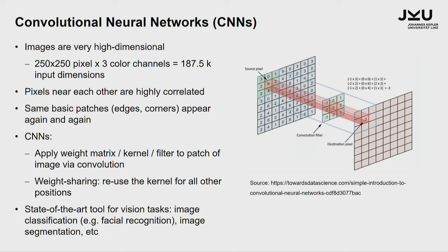You reuse only a very small number of weights — in this picture it's only nine weights reused again and again. This is in very stark contrast to a fully connected network where every pixel would be connected to every pixel of the first feature map. So this weight sharing is the magic of CNNs. Since about 2012, all vision challenges are won by convolutional nets, completely changing a decade-old game. Everything today — facial recognition, segmentation — is done by convolutional nets.